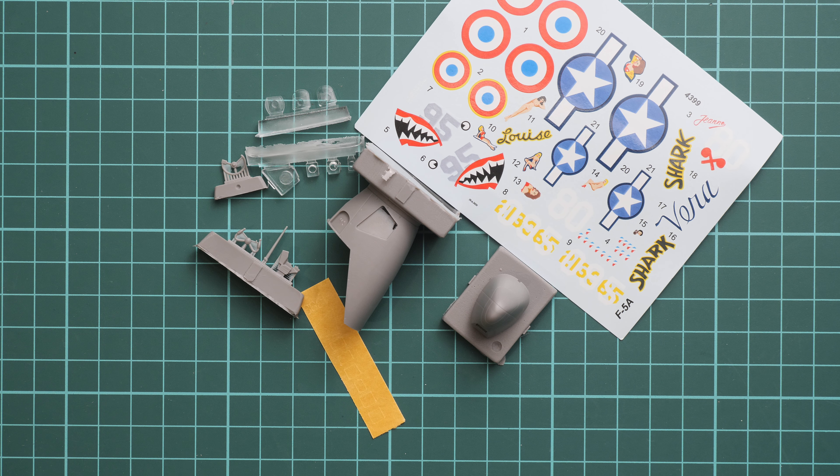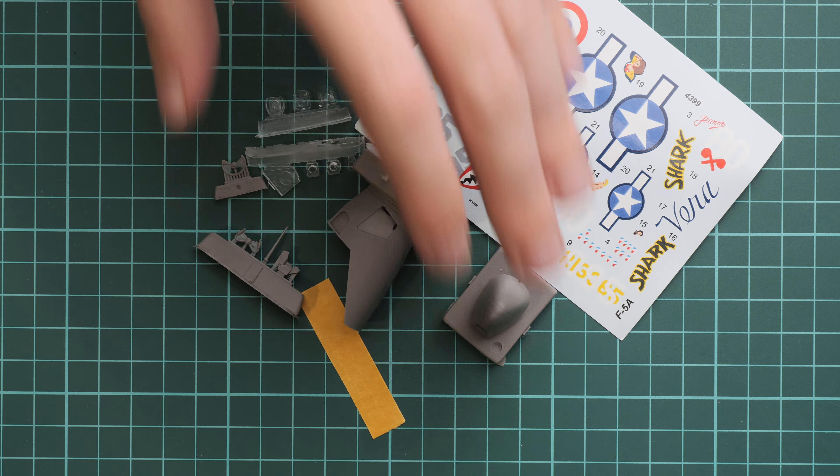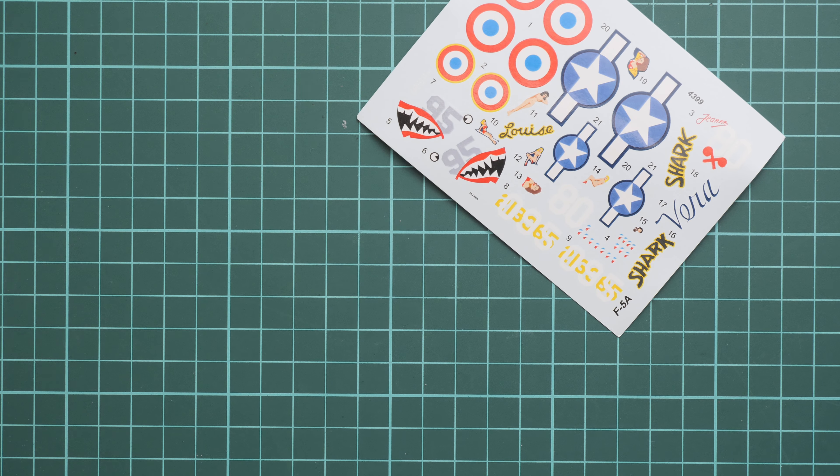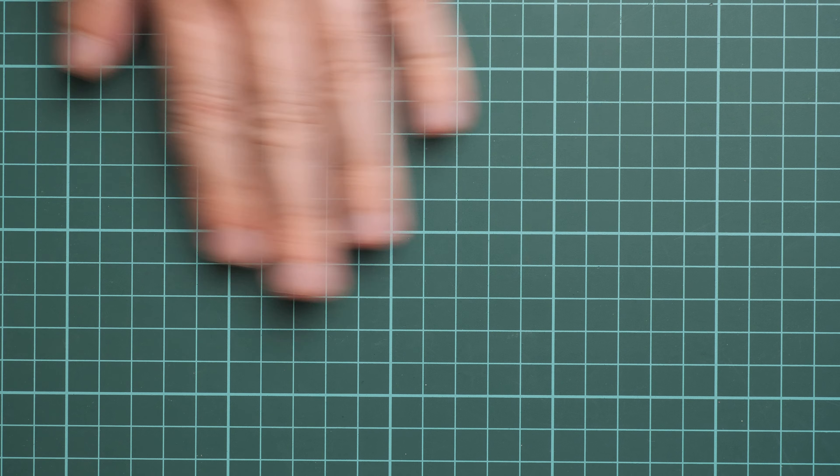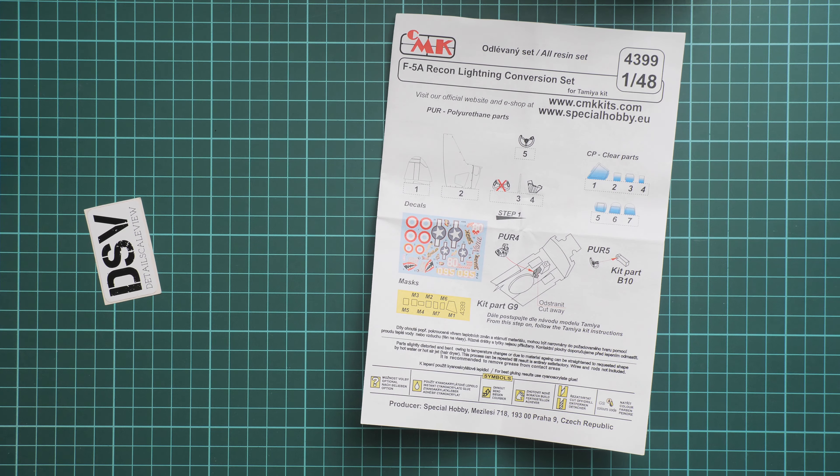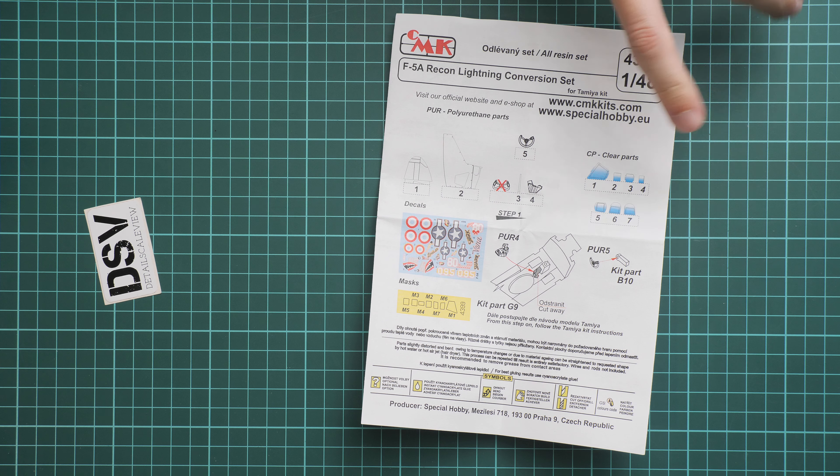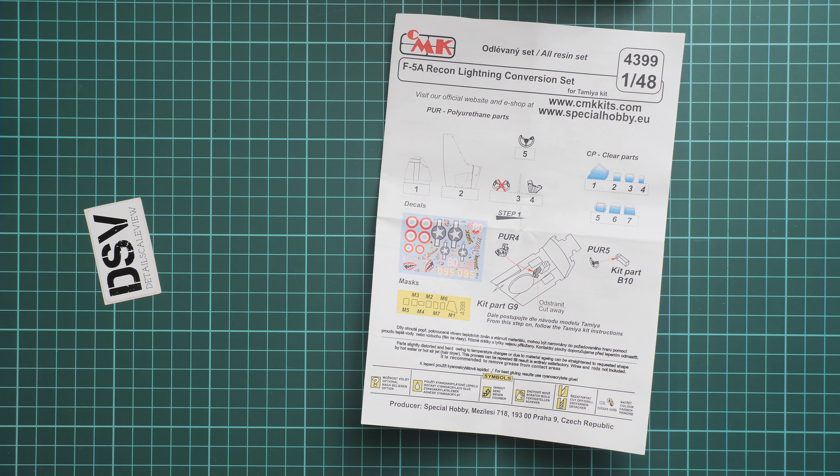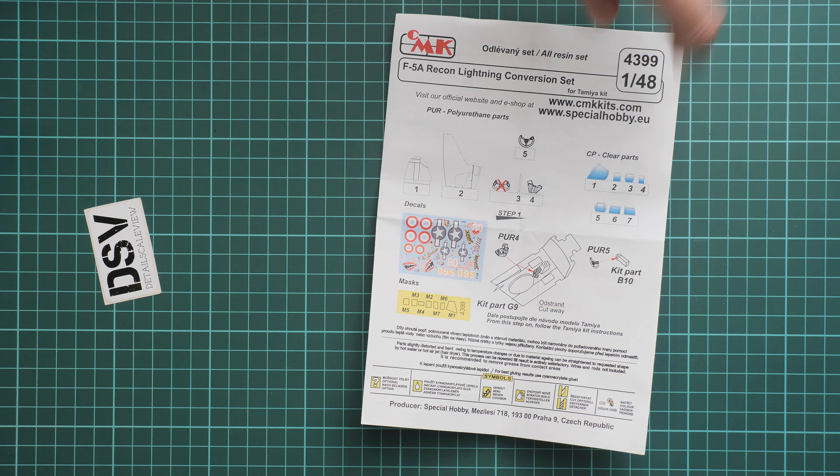Next we have the assembly manual. The assembly manual is printed in color, surprisingly, in the form of a typical brochure. First of all, we have the parts map here. Then we go on with some upgrades for the cockpit. I can see from this step on, follow the Tamiya kit instructions.